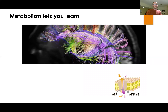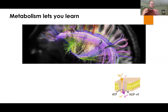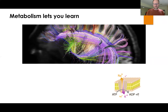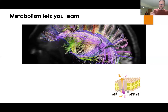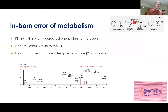Those reactions underpin everything that happens in life. It's what allows you to learn and what allows you to make the action potentials that fire down your neurons. Ultimately, that's made possible by voltage-gated ATP-burning reactions that maintain the voltage gradient across your cells and allow you to fire action potentials. So learning itself is based on metabolism. It's also something we become really familiar with in disease.